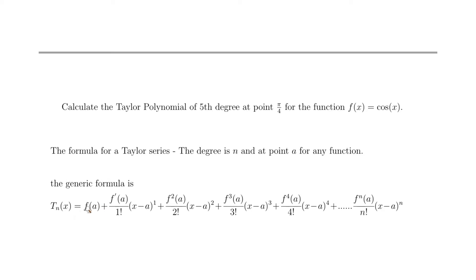The first term is f(a) = f(π/4), which is cosine of π/4. Then we have the first derivative at π/4 divided by 1 factorial, times (x − π/4)¹. Then the second derivative at π/4 divided by 2 factorial, times (x − π/4)². Then the third derivative at π/4 divided by 3 factorial, times (x − π/4)³.